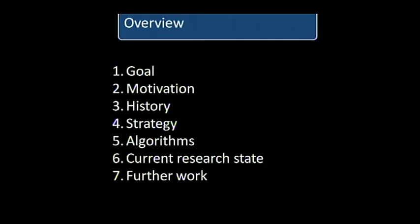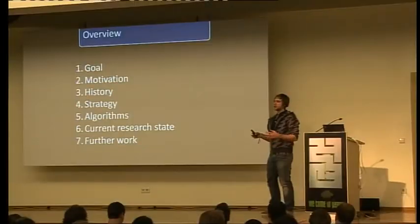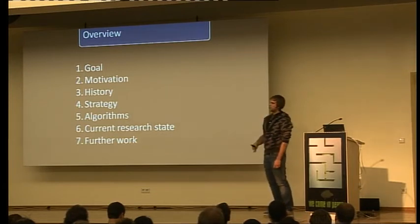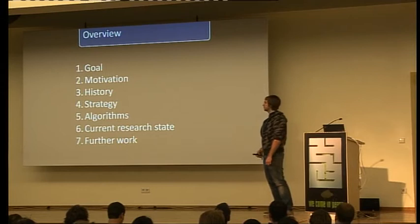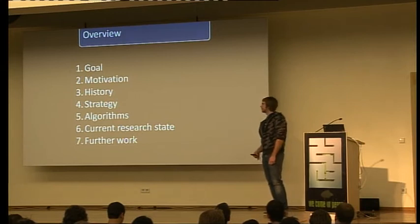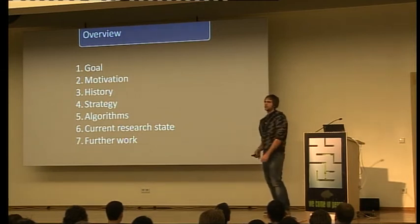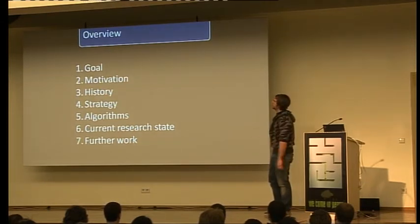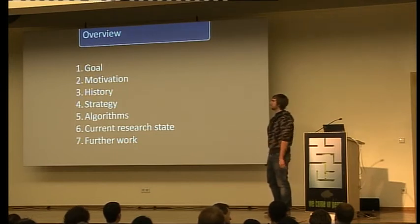We're going to first define the goal — what we actually wanted to achieve with this research. Then we'll motivate why we did the complete research and what parts have been done before, covered in the history section. Then we'll go into technical details in the strategy and algorithms parts, and finally discuss the current research state and further work.